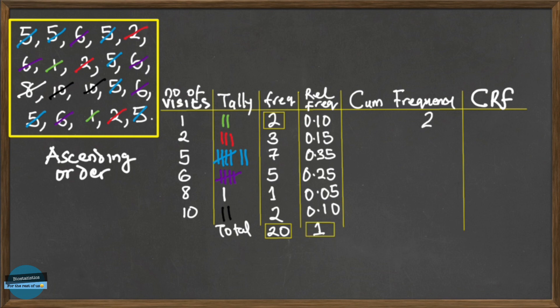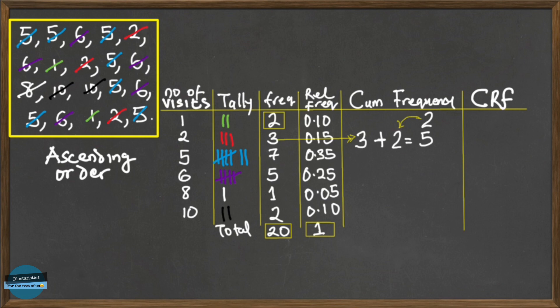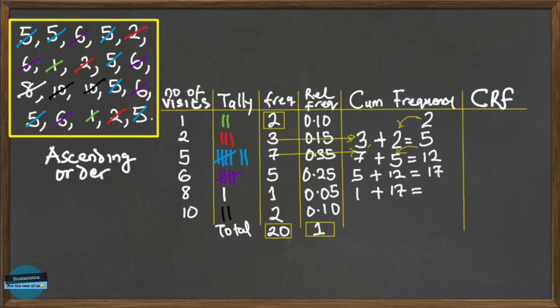The cumulative frequency is the sum of all frequencies up to a particular value. For 1 visit, the frequency is 2 — there's nothing before it, so cumulative frequency is 2. For 2 visits, we add 2 + 3 = 5. For 5 visits, it's 5 + 7 = 12; then 12 + 5 = 17, and so on, continuing up the table.